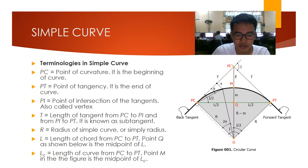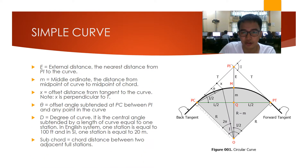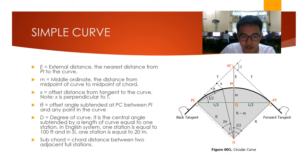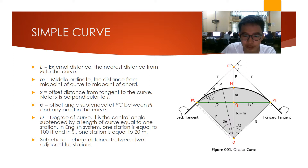Point Q is the midpoint of the curve, and Lc is the length of curve from PC to PT. Point M in the figure is the midpoint of Lc. E is the external distance — the nearest distance from PI to the curve. M is the middle ordinate — the distance from the midpoint of the curve to the midpoint of the chord. X is the offset distance from the tangent to the curve, measured perpendicular to the tangent. Theta is the offset angle subtended at PC between PI and any point on the curve. D, the degree of the curve, is the central angle subtended by a length of curve equal to one station — 100 feet in the English system and 20 meters in SI. Sub-chord is the chord distance between two adjacent full stations.